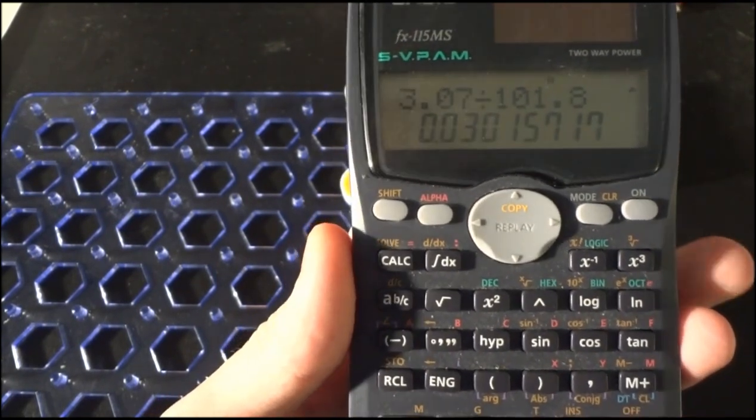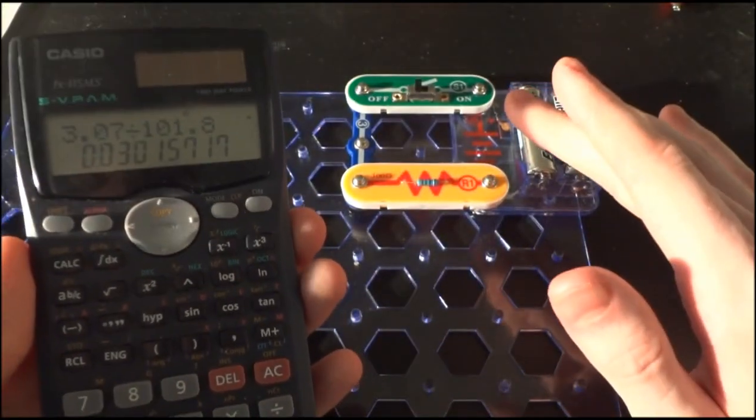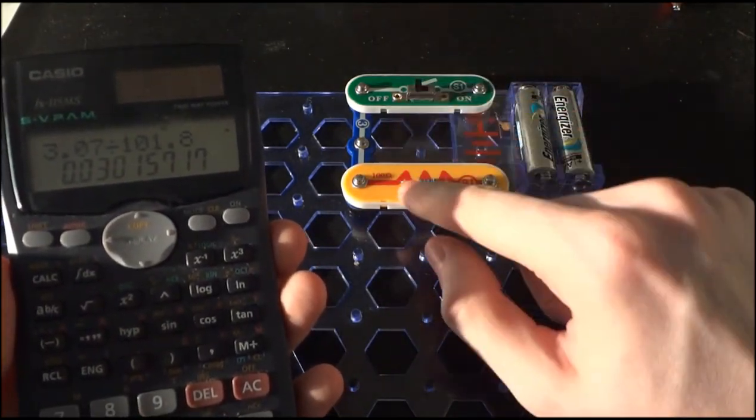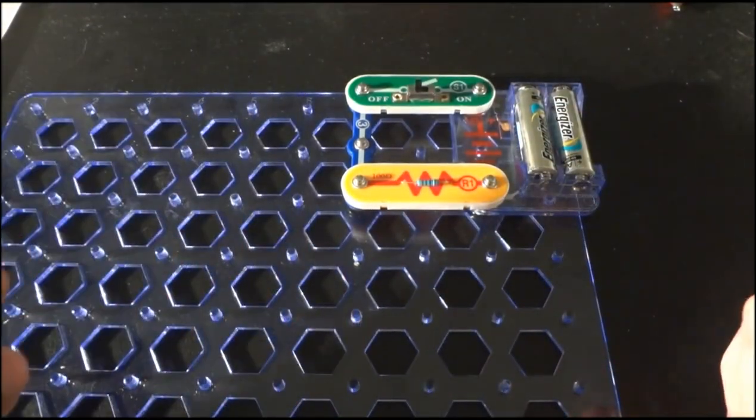And that gives me 0.030 amps, which in this case would be equivalent to 30 milliamps. So when I turn this circuit on and current starts flowing, I should find 30 milliamps of current going through the circuit. So let's do that.